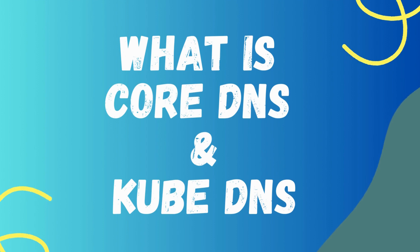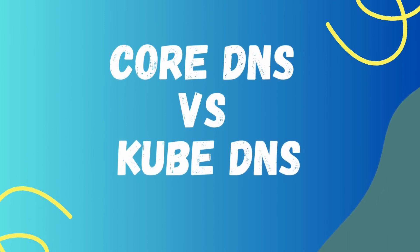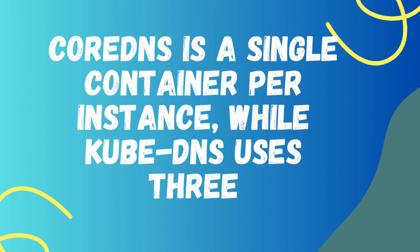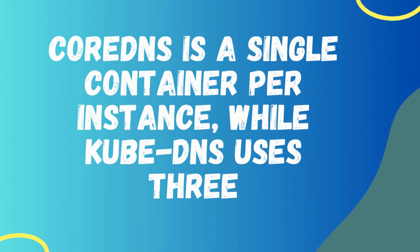Next, we will talk about 10 curated points to understand the core differences. Point number one: CoreDNS uses a single container per instance while KubeDNS uses three. This means CoreDNS is more lightweight and efficient. A single container instance of CoreDNS is more efficient because CoreDNS does not need to run separate containers for caching and serving DNSSEC records.